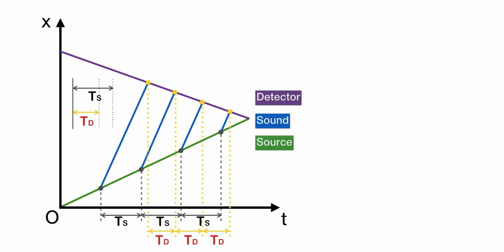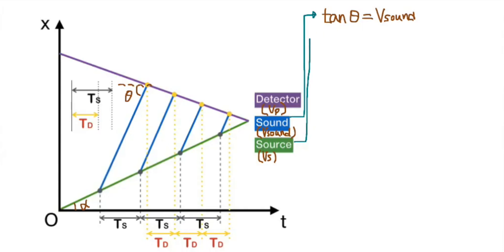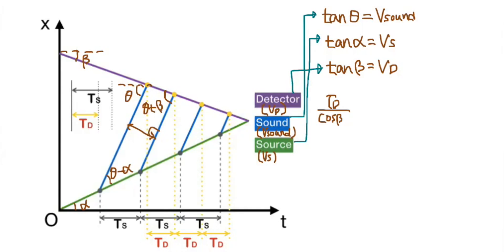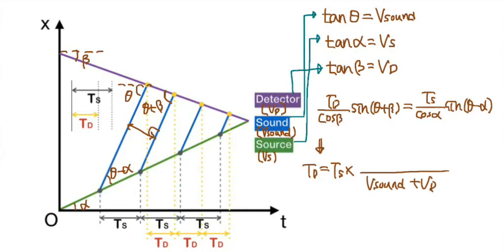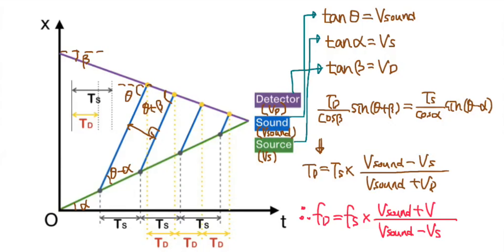The detected period Td is shorter than the period of source and the detected frequency is getting larger — the sound is heard at a higher pitch. As in the previous case, you can find the formula between Ts and Td. The inverse of this formula gives the relationship between the frequencies of emitted sound and the detected sound. This is the general formula for the Doppler effect. Wow, that's cool! Thanks, teacher! I'll see you next time! Bye!